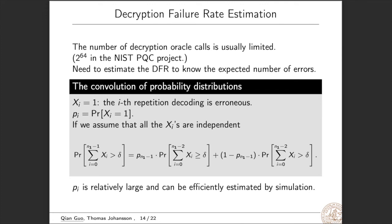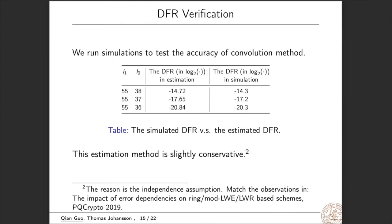Let xi equals 1 denotes the event that the i-th repetition decoding is erroneous. So we use pi to denote its probability. If we assume that all the xi's are independent, then we can get this formula to estimate this error probability. The point is that pi is relatively large and can be efficiently estimated by simulation.